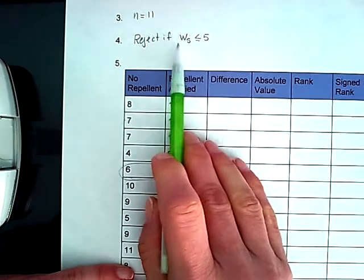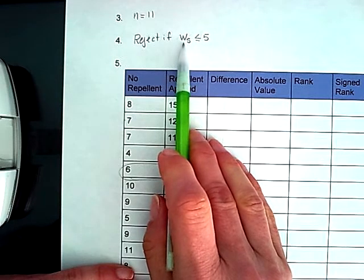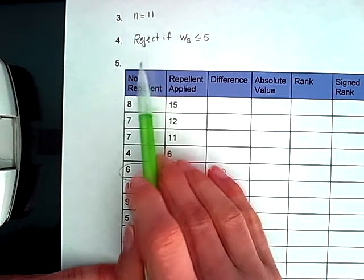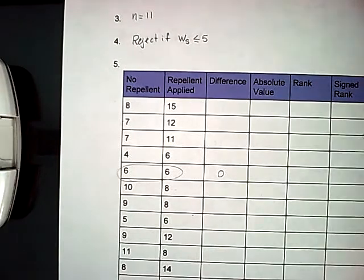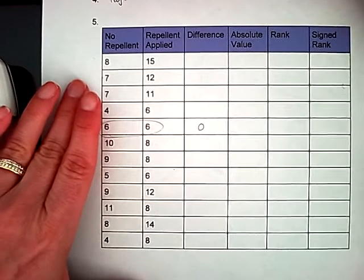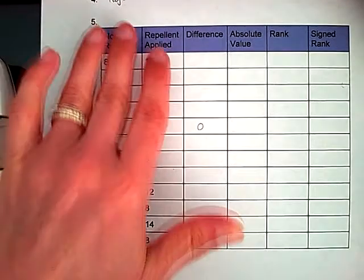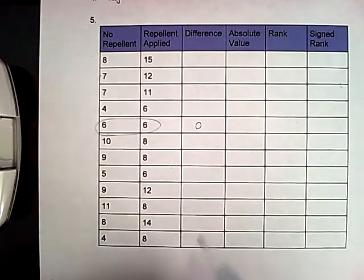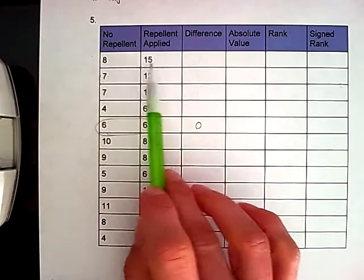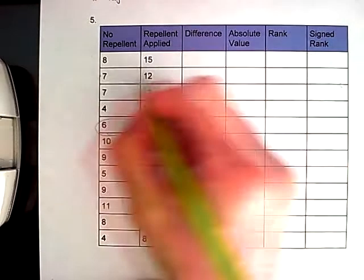All right. So now we have to figure out what our test statistic is. So I set up a table for us to use. We're looking at ranking the differences of our before and after using the repellent. So the first thing I'm going to do is I'm going to go through and I'm going to find the differences.